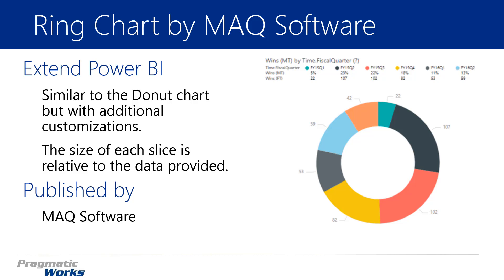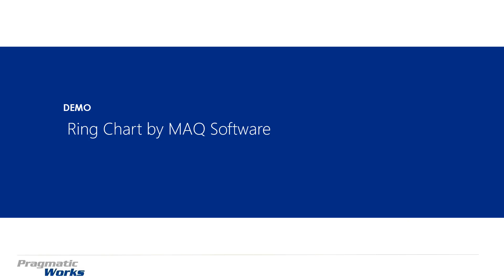You can have multiple series, the legend is quite different as you can see in the screenshot on the right-hand side. The basic idea of the Donut Chart still applies — the size of each slice is relative to the data you provide. But there are more customizations, more data labels you can adjust, and animation you can turn on or off. The best way to understand it is just to get into it, developed by MAQ Software.